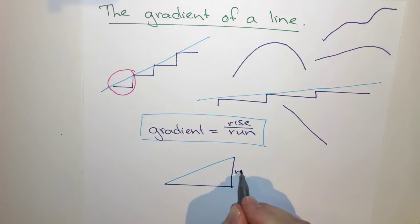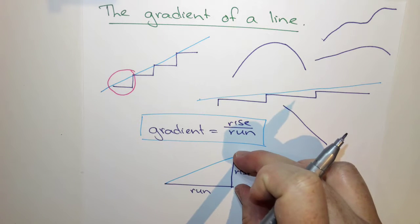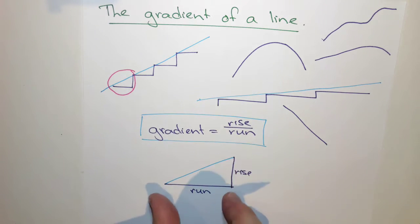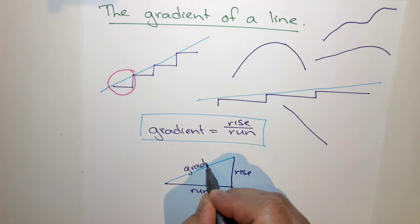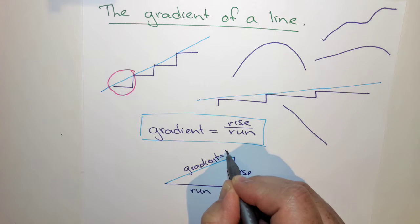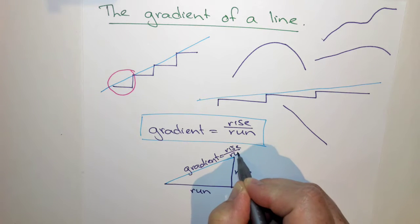So here's the rise, because I'm rising up. And here's the run, how far along I step. So that's how wide my foot is, and that's how high up I need to step. Rise, run. And the gradient, which is what we're trying to find here, the gradient is equal to the rise over the run.